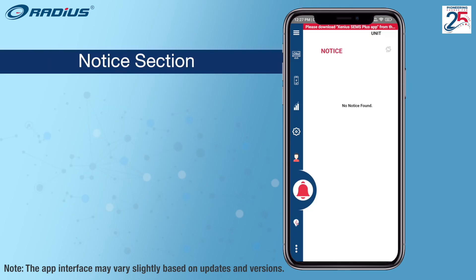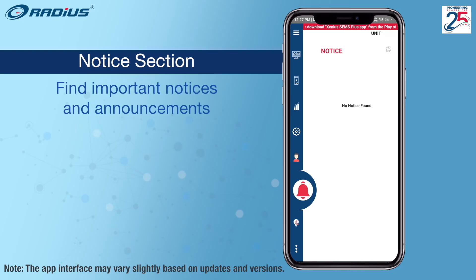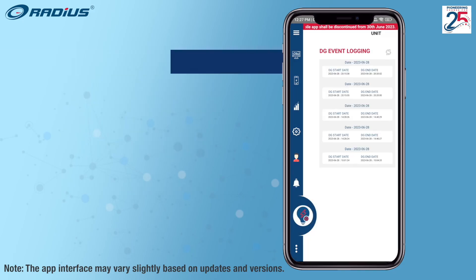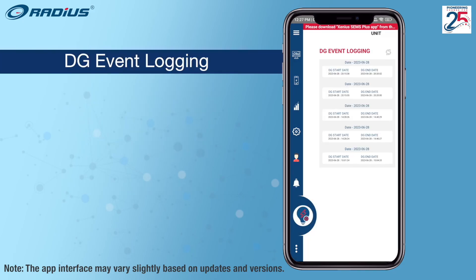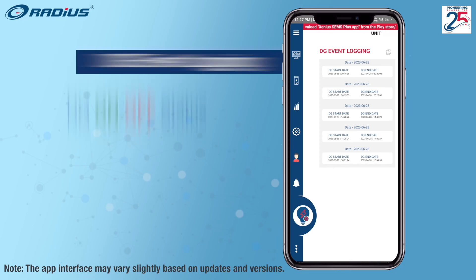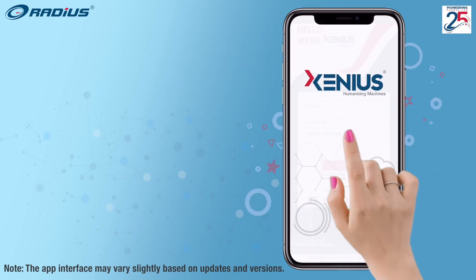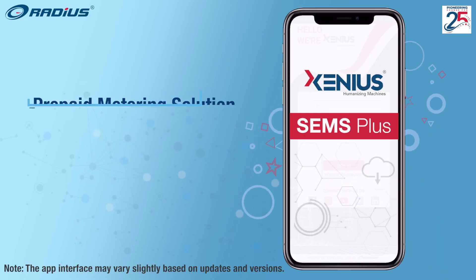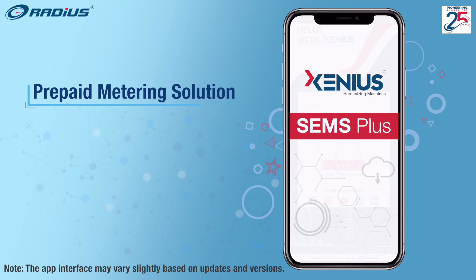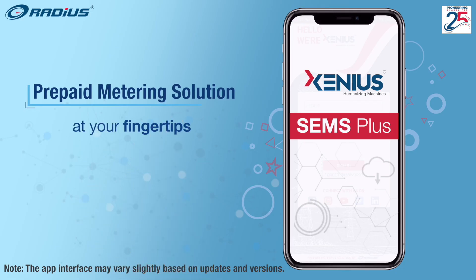The notice section provides important notices and announcements. DG event logging allows users to keep track of DG on and off status. Xenius SEMS Plus — prepaid metering solution at your fingertips.